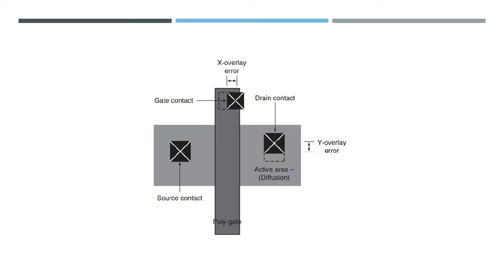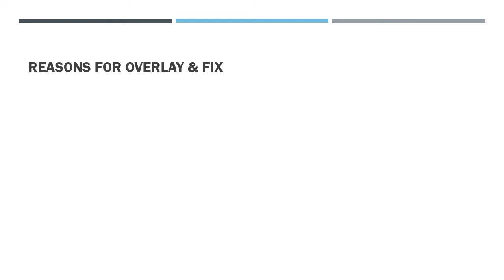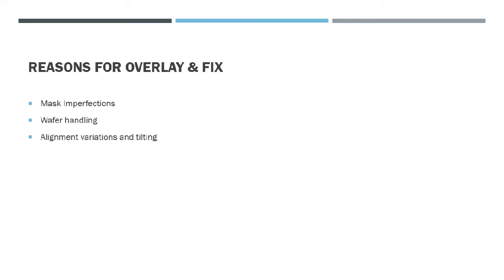We'll try to understand why these overlay errors occur and also see the fix. One reason is mask imperfection — if the mask is not properly produced, it can lead to overlay errors. Also, improper wafer handling during manufacturing can lead to overlay imperfections. Additionally, alignment variation and tilting during manufacturing can cause overlay errors, along with several other reasons.